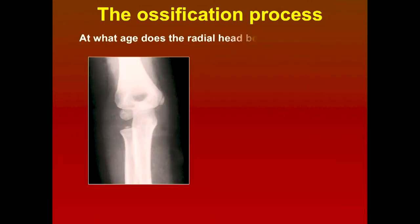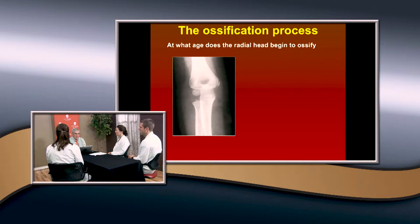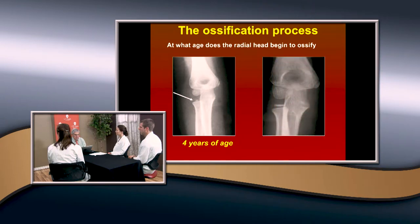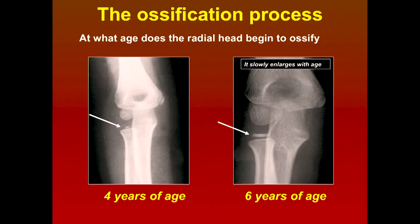Let's look at the ossification process. When does the radial head begin to ossify? At about three or four years of age. Here's one patient at four years of age, and we took this x-ray later - you can see that ossification will go up to about six or seven years of age before it's fully ossified. Sometimes there's a bipartite ossification center, and I'll show you in a few minutes how that can lead you astray.